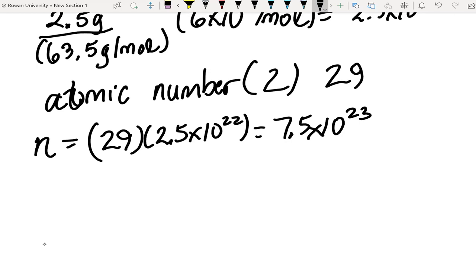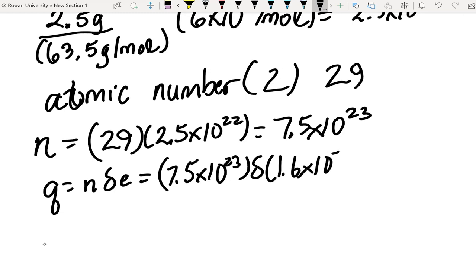And so, therefore, the charge on each penny, Q, which we said was N delta E, well, that's 7.5 times 10 to the 23 times delta times 1.6 times 10 to the minus 19, which is 1.2 times 10 to the 5 coulombs. We've got to keep our units.